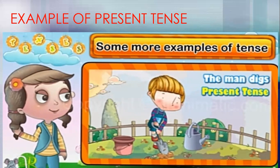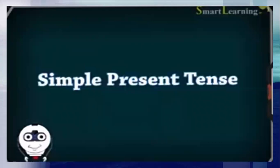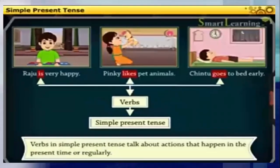Now let us study in detail about the present tense. What do you mean by simple present tense? The simple present tense is formed by using the first form of the verb — it may have 's' or 'es' added. There are four types of present tense: simple present tense, continuous present tense, present perfect tense, and present perfect continuous tense.